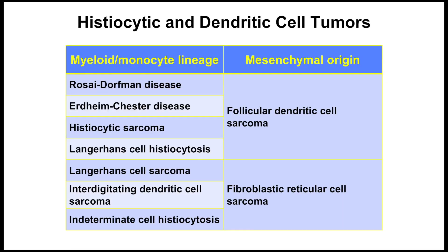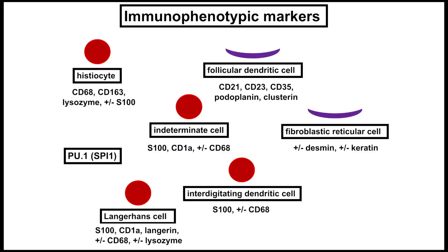We're going to talk about these two different lineages of histiocytic and dendritic cell tumors and the tumor types that fall into these groups. In the myeloid or monocytic lineage, we have Rosai-Dorfman disease, Erdheim-Chester disease, histiocytic sarcoma, Langerhans cell histiocytosis, the very rare Langerhans cell sarcoma, interdigitating dendritic cell sarcoma, and another rare tumor we refer to as indeterminate cell histiocytosis. There aren't very many mesenchymal dendritic cell tumors — they are follicular dendritic cell sarcoma and the exquisitely rare and poorly characterized fibroblastic reticular cell sarcoma.